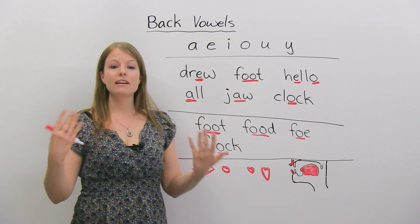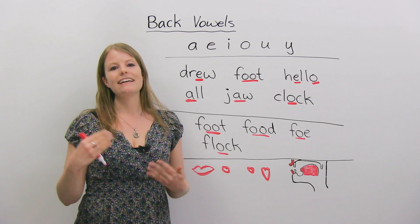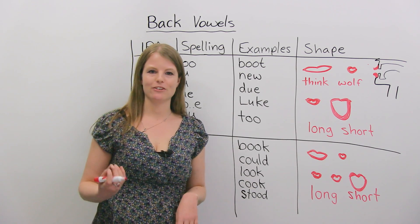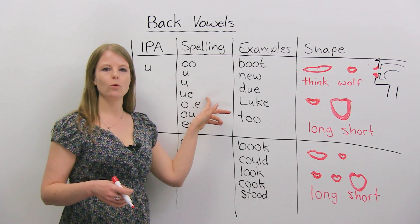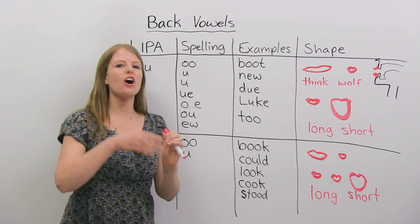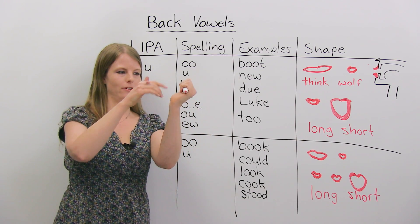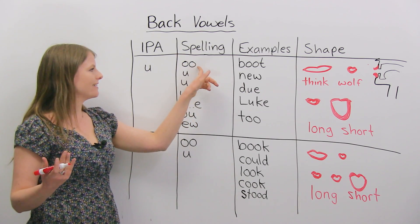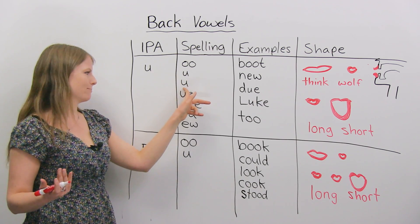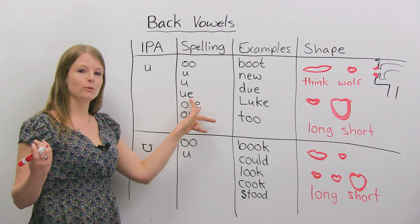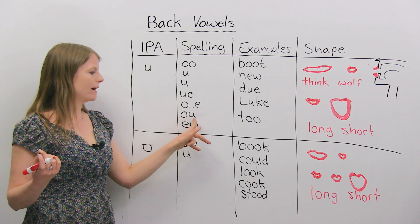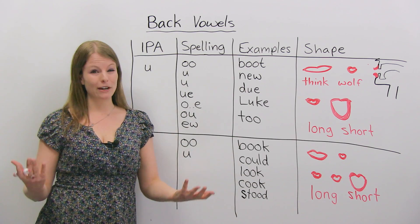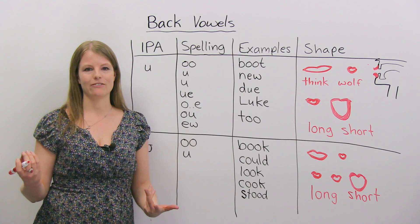Now let's learn some of these back vowels and how to make them. The first back vowel sound we're going to learn is the "oo" sound. Your tongue should not be touching your teeth — it's a little bit back. Here is the spelling of the sound. You might see it as two O's, it might be a U, U-E sometimes like "blue", O-N-E, O-U, and W. So there are many different spellings of this sound. That's one reason why you can't use the spelling always to know how a sound is pronounced.